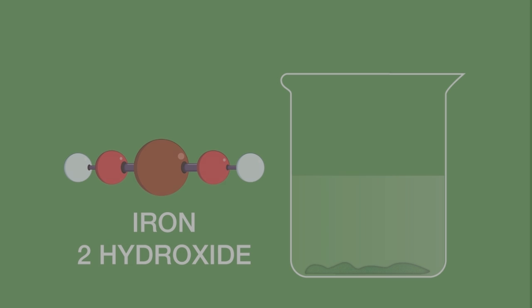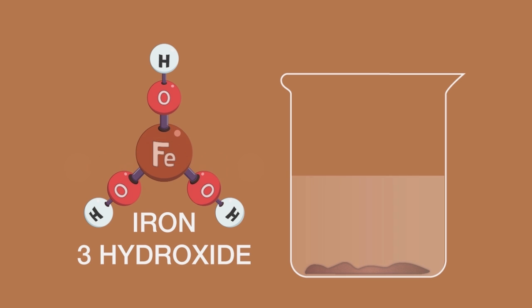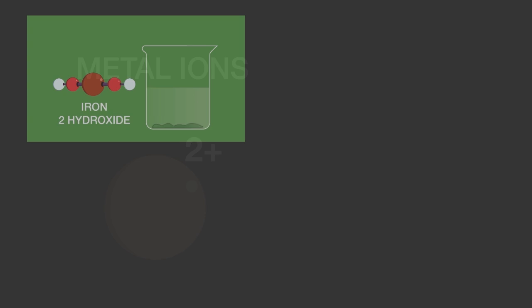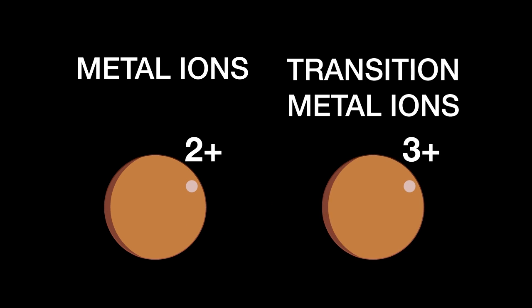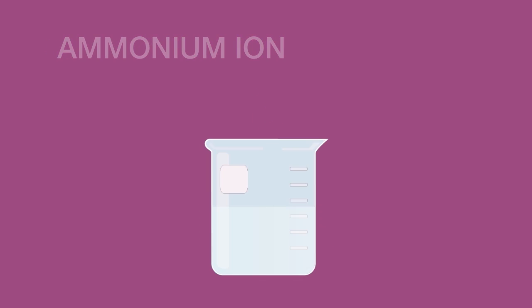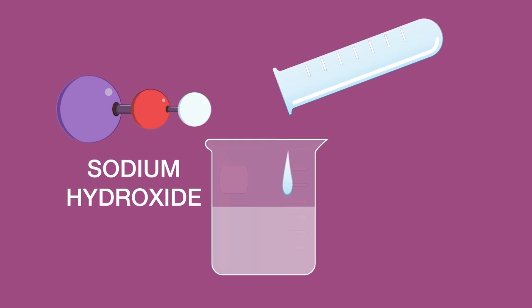The color of the metal hydroxide precipitate produced can help us determine the identity of the metal ion. Most of these metal ions are transition metal ions. The ammonium ion can be tested using the addition of aqueous sodium hydroxide, which forms ammonia.